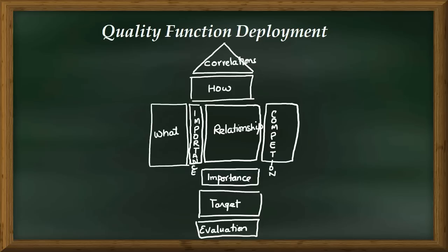You may see a number of variations of this QFD structure, but the components described are what most House of Quality diagrams contain. Some might have a few more components and some might be missing a few, but this is the overview. On the next slide, let's take an example and see how we make a Quality Function Deployment for making an online Six Sigma course. Based on customer feedback we will identify customer needs, how those requirements are met, and what importance the customer gives to each.